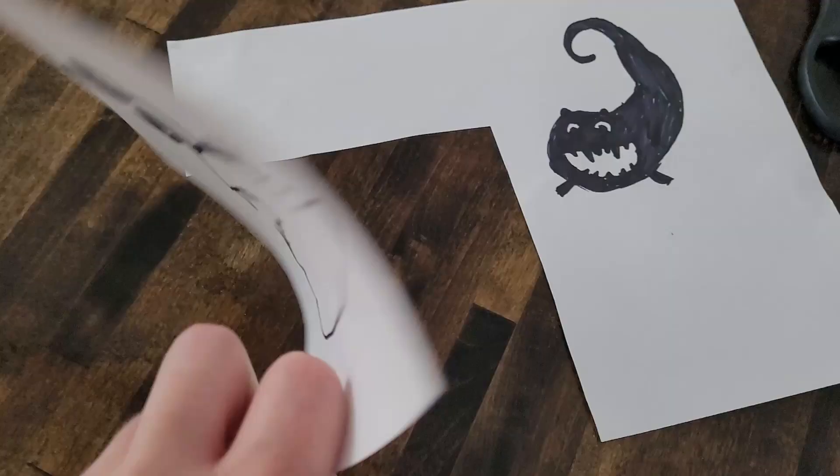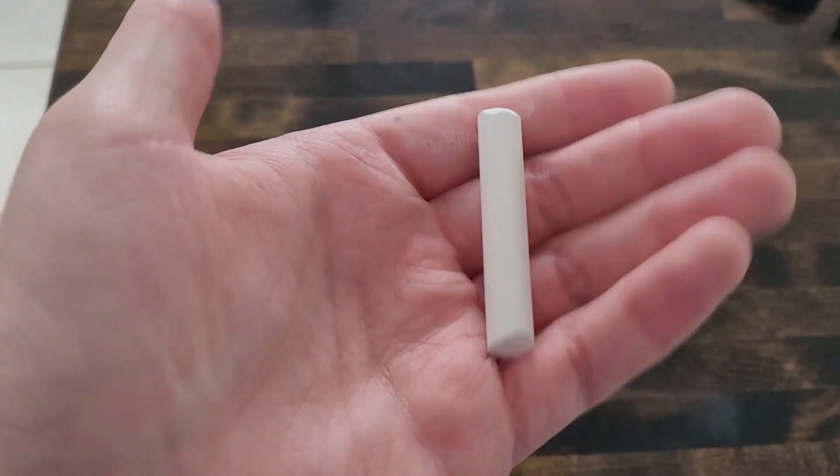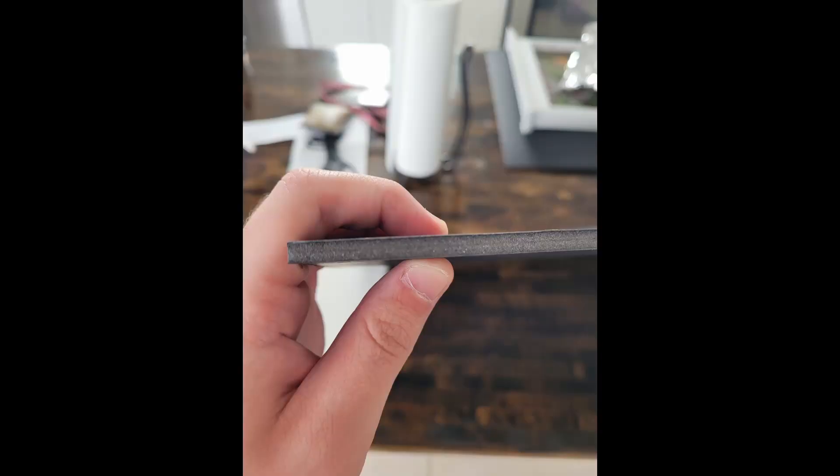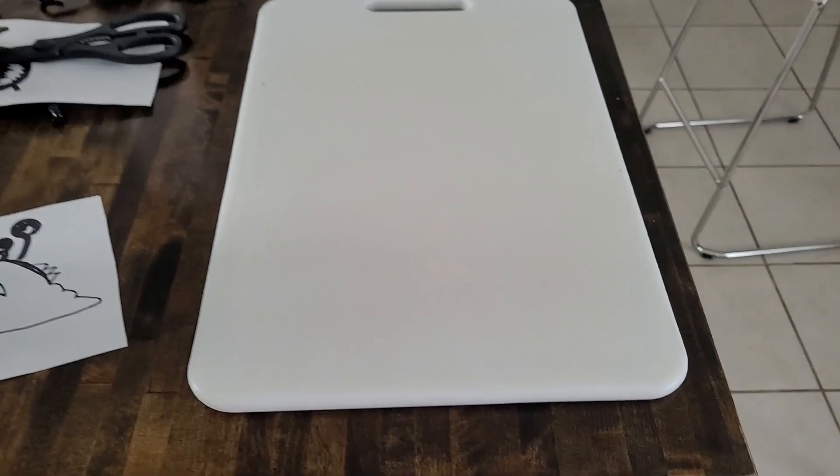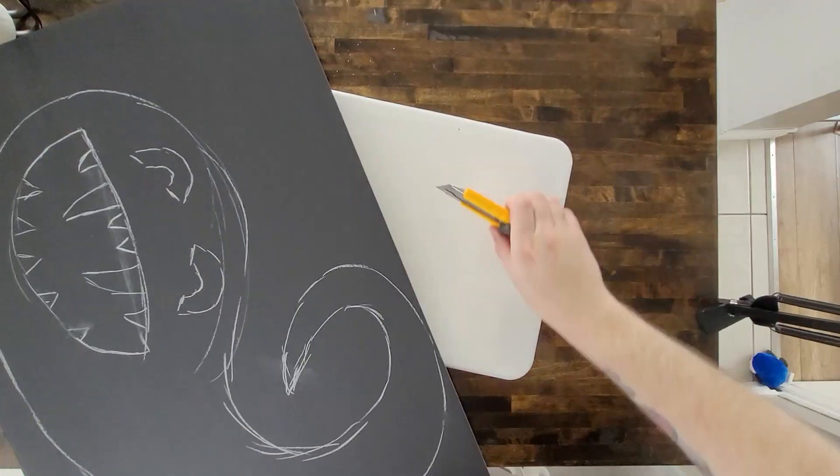It's going to be monster silhouettes for the window. So I'm going to use this chalk to draw on this Bristol Board. It's pretty thick, so instead of scissors, I decided to use a cutting board and a utility knife.